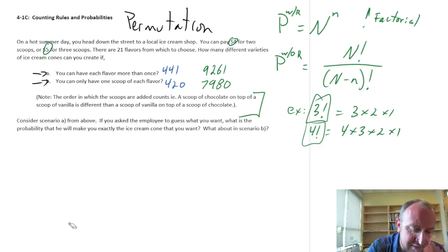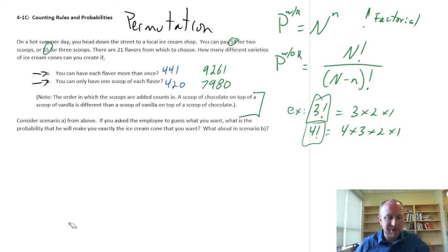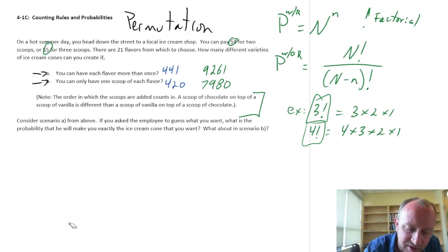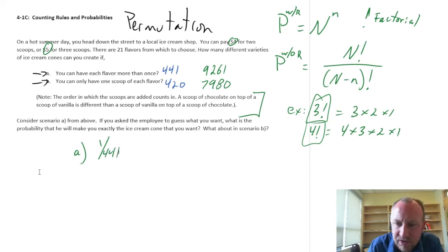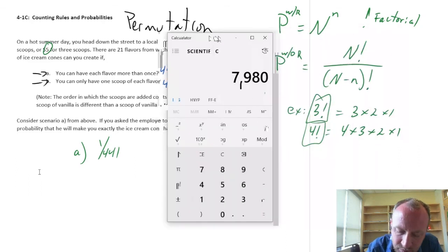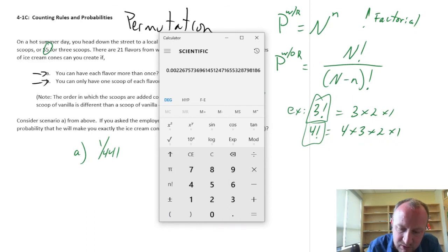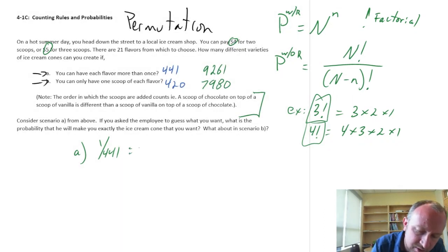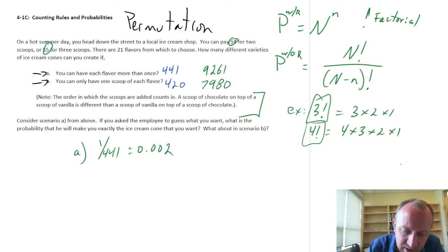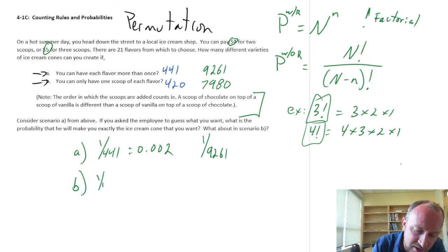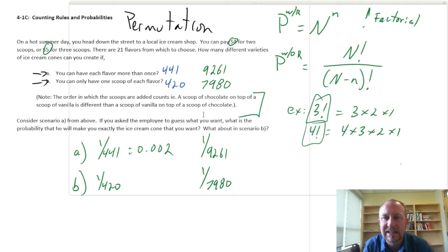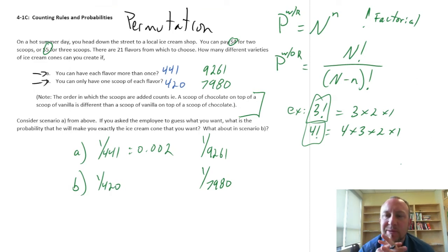Apart from this last little section — considering Scenario A, if you ask the employee to guess what you want, what is the probability that he'll make exactly the ice cream cone that you want? In Scenario A with two scoops, it would be 1 in 441 — that's 0.2%. With three scoops it's 1 out of 9,261. And in Scenario B, 1 out of 420 for two scoops, or 1 out of 7,980 for three scoops. So the probability of that employee guessing exactly the ice cream cone you want out of all those possible varieties is pretty slim.